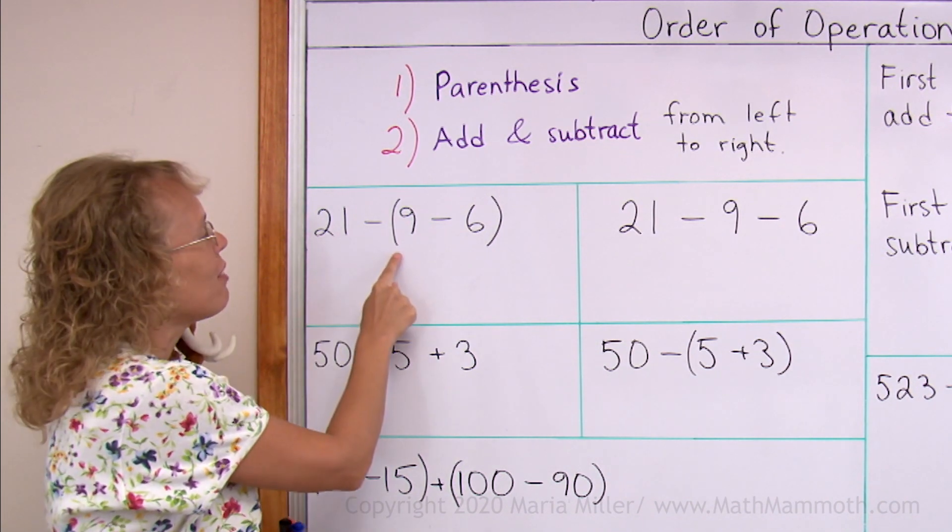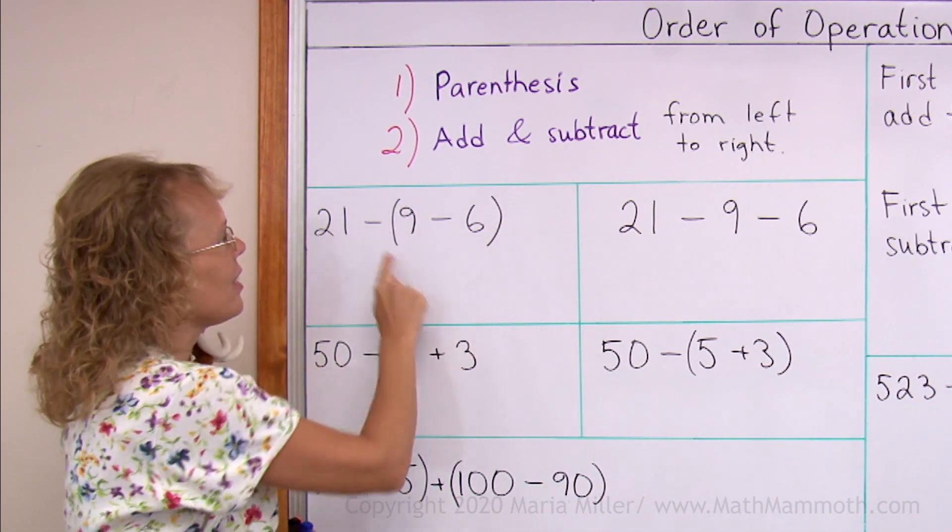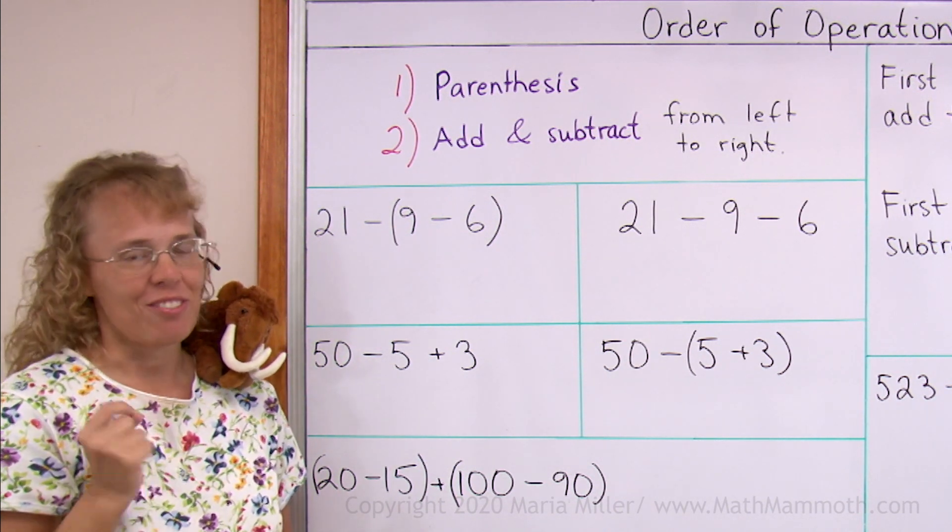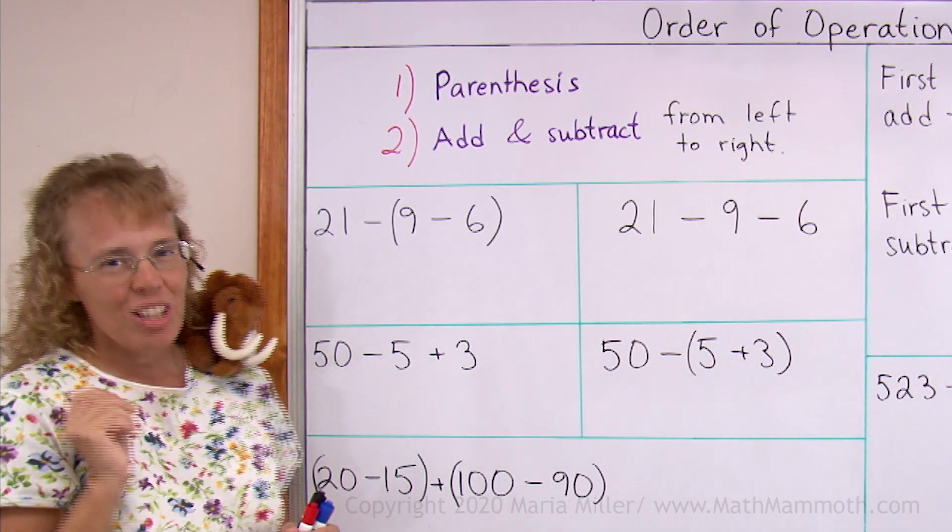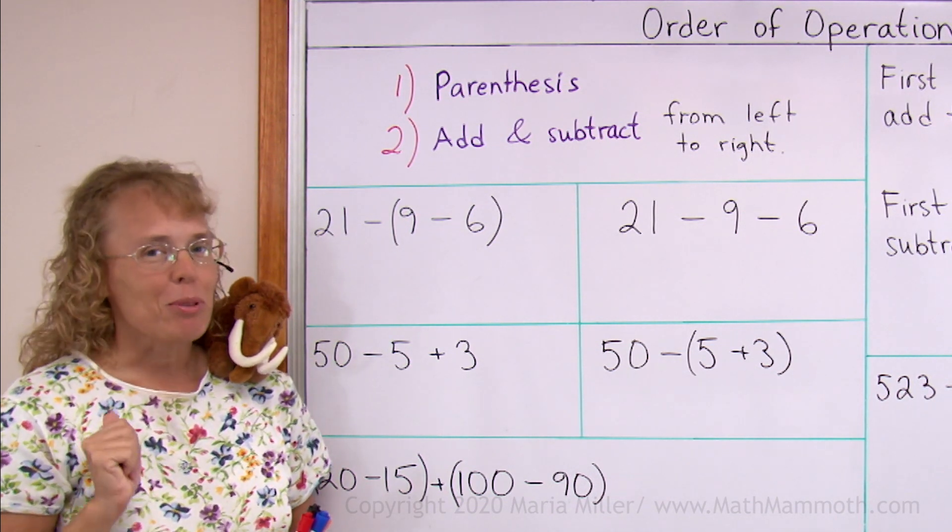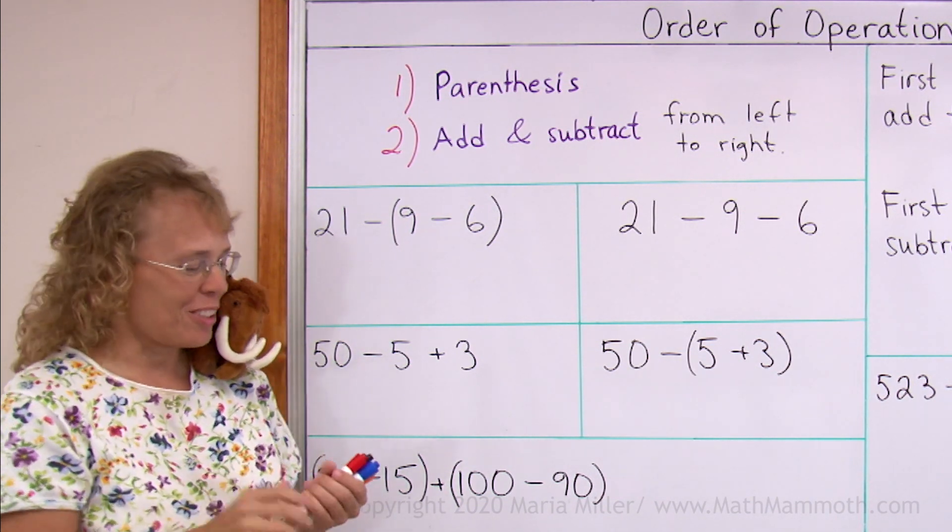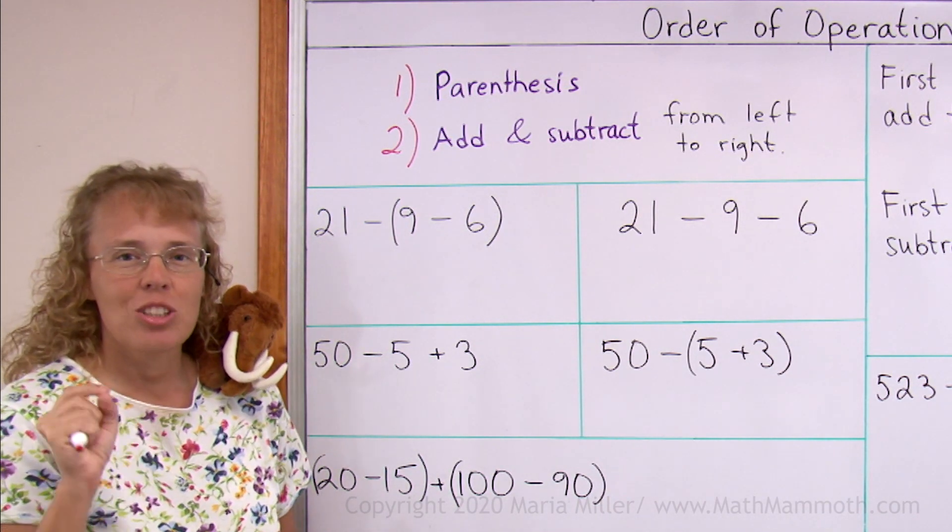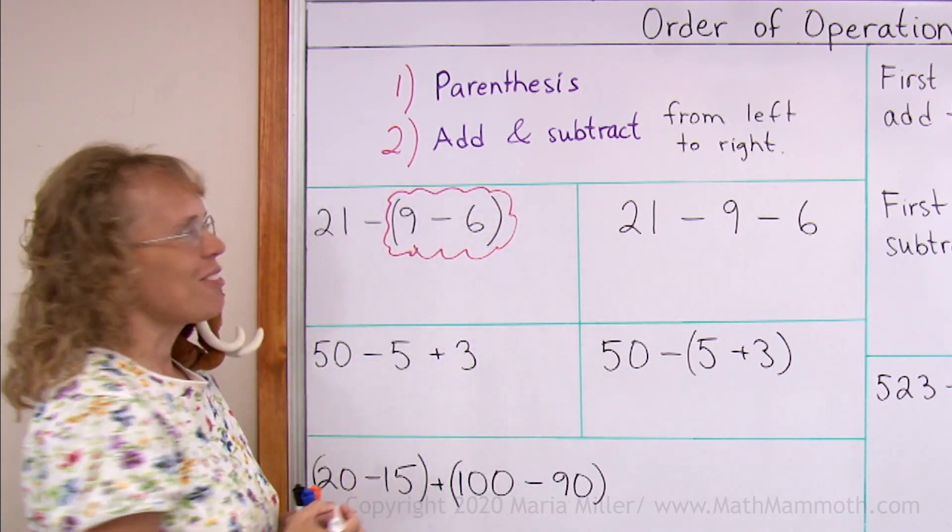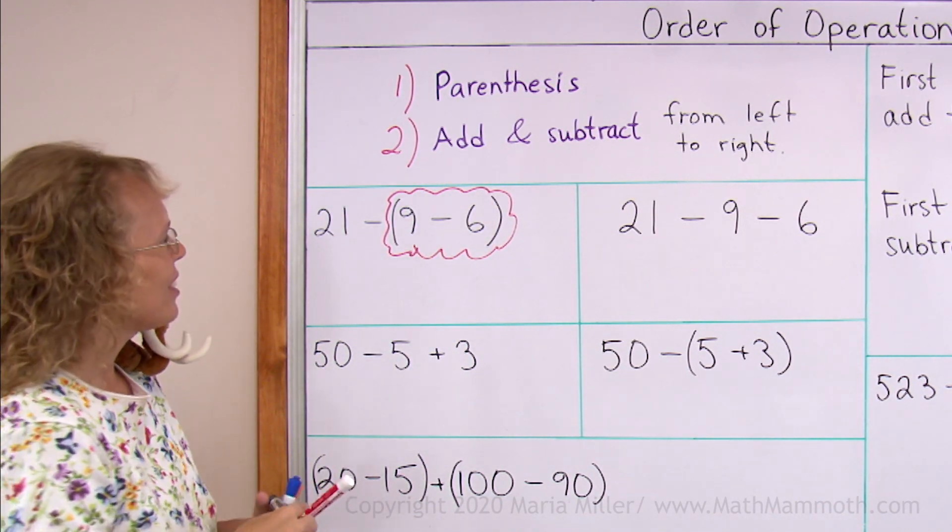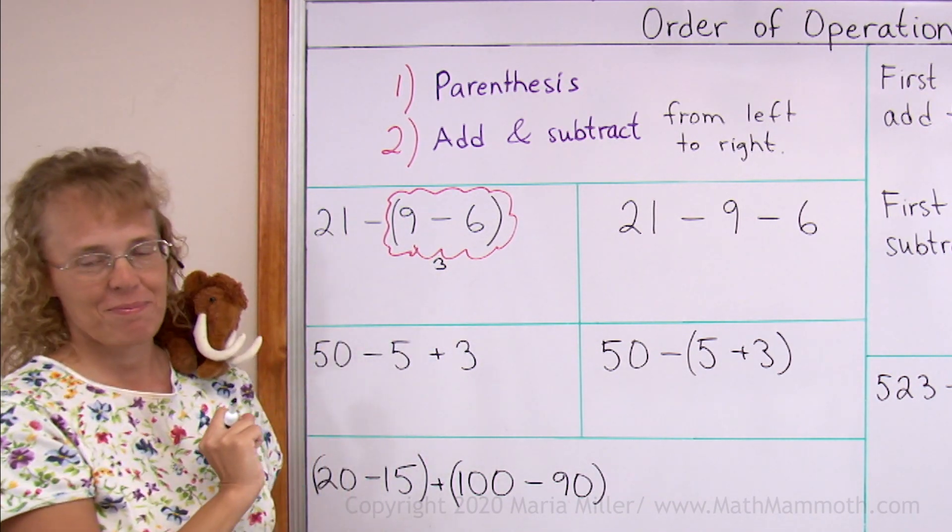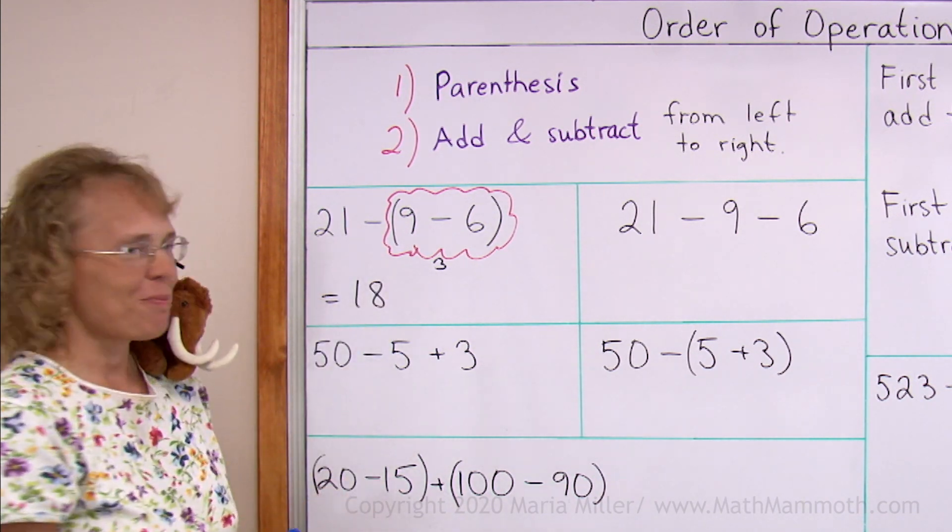In this problem we have parentheses, it is these rounded lines here. And whatever is inside them, what operation is inside there, has to be done first. Order of operations is a fun topic for all children because you can draw some bubbles, or balloons if you prefer, like this. The operation that is to be done first, draw a bubble around it. Solve this first, 9 minus 6. That is 3. And then you go 21 minus 3. So we get 18.